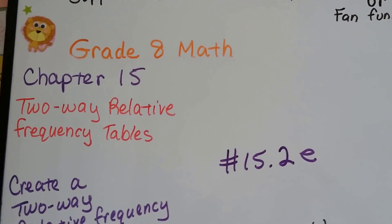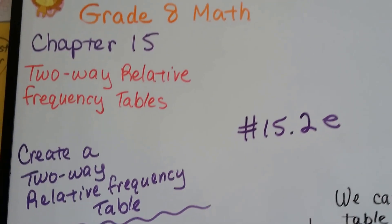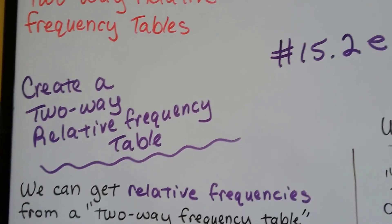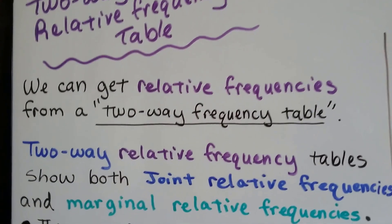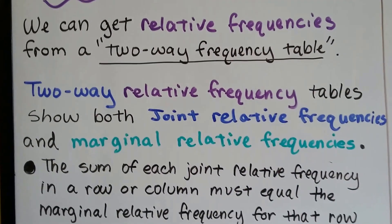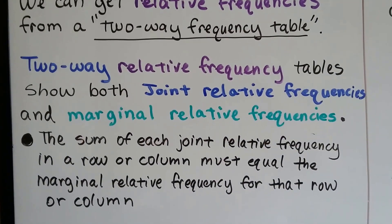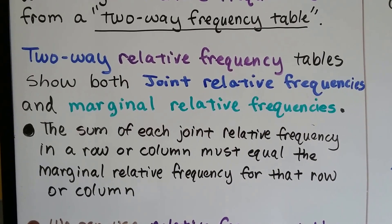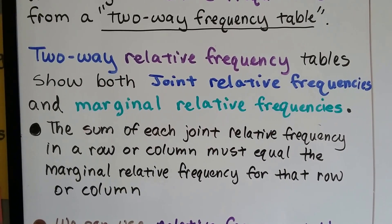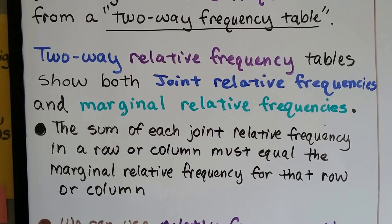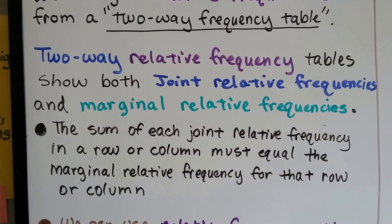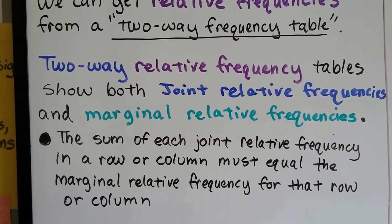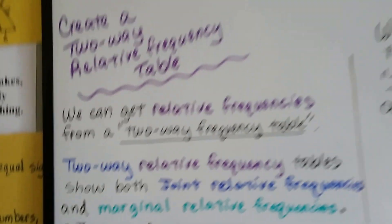Grade 8 math number 15.2e - we're going to create a two-way relative frequency table. We can get relative frequencies from a two-way frequency table. Two-way relative frequency tables show both joint relative frequencies and marginal relative frequencies. The sum of each joint relative frequency in a row or column must equal the marginal relative frequency for that row or column.